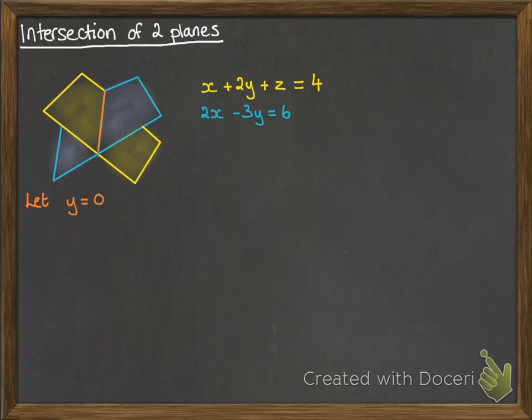So you first of all set one of your variables to be 0. That would mean that x would be 3 and z would be 1, just putting it into those equations there. So I've used the blue equation. If you put y equals 0 into there, you get that x has to be 3. And then if you take x is 3 and y is 0 and put it into the yellow one, you get that z has to be 1.